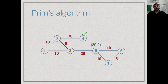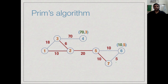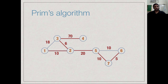With distances 20 for vertex 5 and 70 for vertex 4, we pick vertex 5 and add it. Updating its neighbors: vertex 6 gets distance 10 with neighbor 5, and vertex 7 gets distance 10 with neighbor 5. With two vertices tied at distance 10, we pick vertex 7. Adding vertex 7 causes vertex 6's distance to update to 5 with neighbor 7. We then add vertex 6, and finally vertex 4, completing the spanning tree.